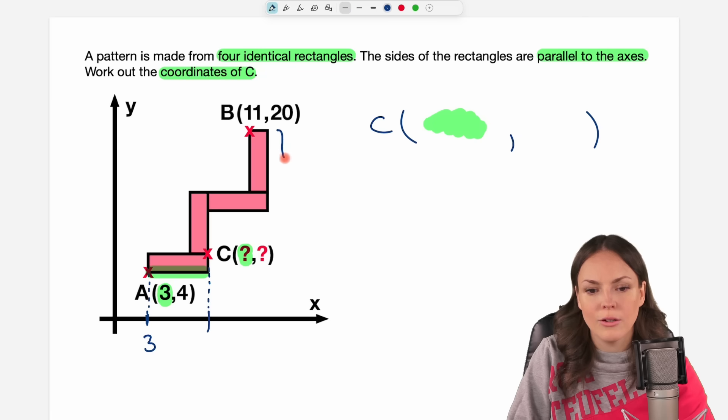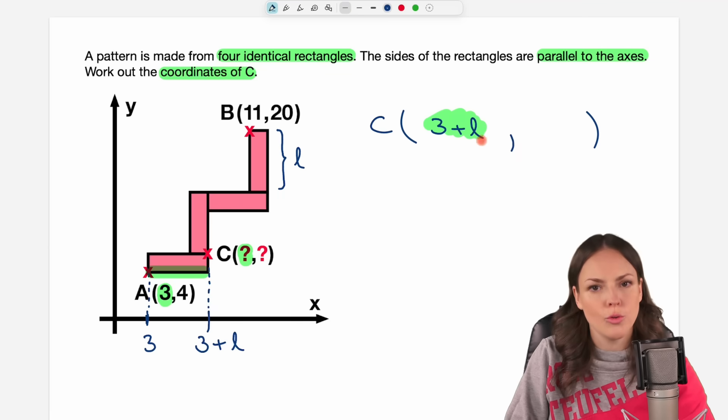We don't know how long this side is, but let's give it a name. Let's call the length of the long side L for long. And we would start at 3, add L to get to this point here. So here we are at 3 plus L. This is the x-coordinate of my point C. We don't know L yet, but this is our plan so far.